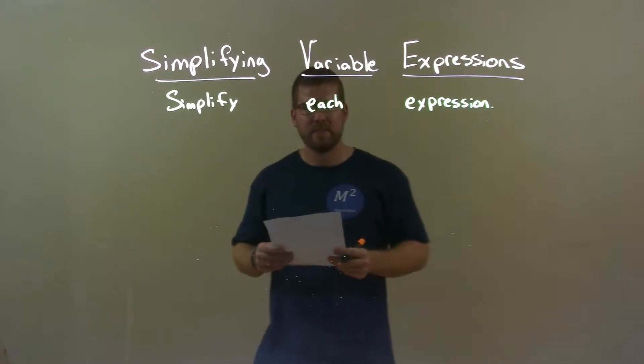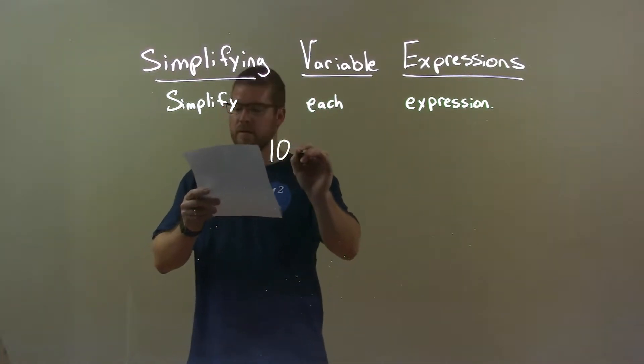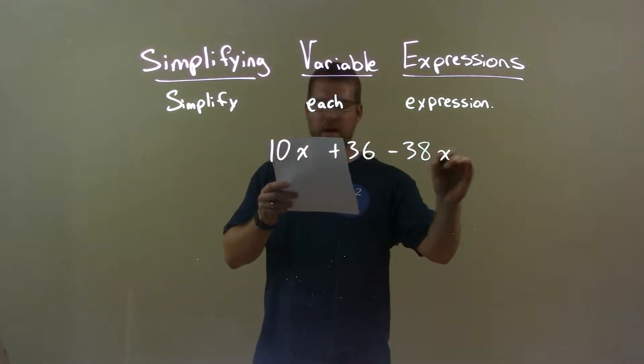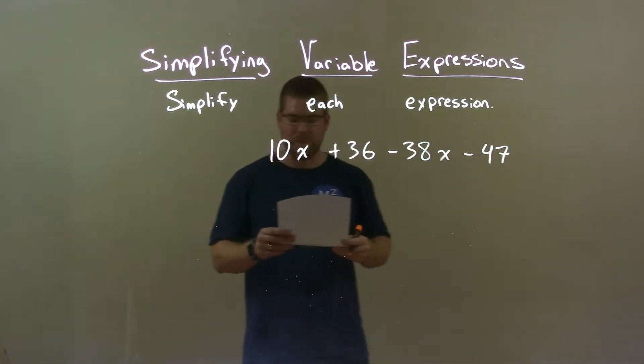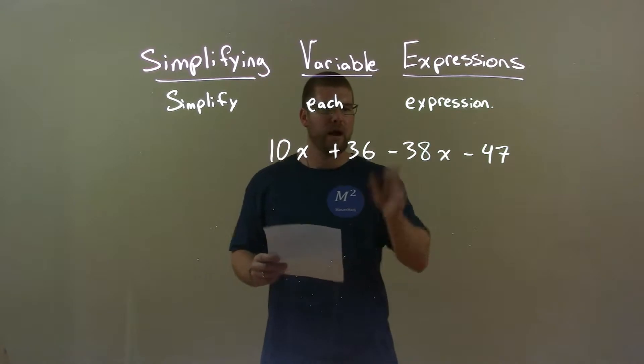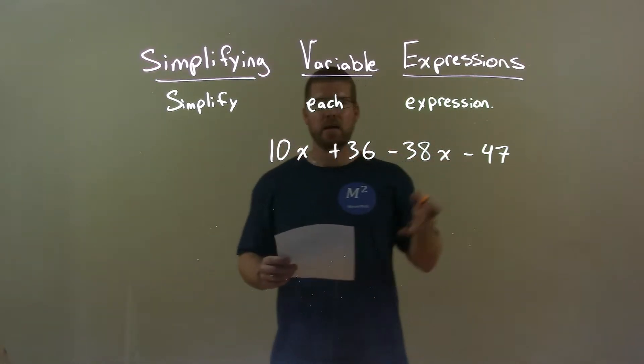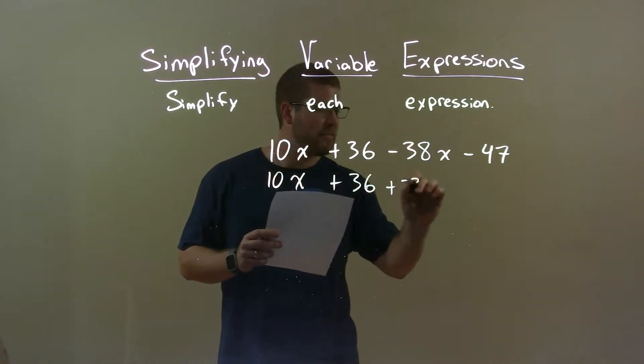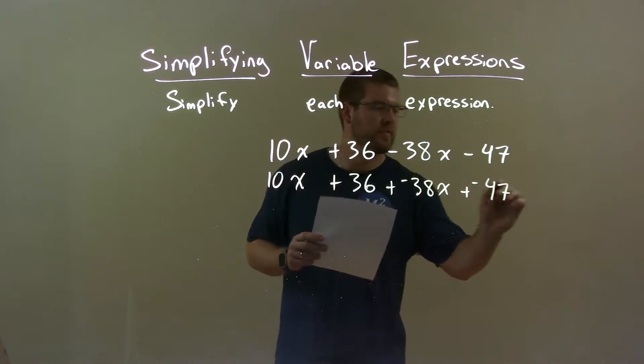So, if I was given this expression: 10x plus 36 minus 38x minus 47. Kind of large there. So first step I like to do here is I like to write all my subtractions as adding a negative. 10x plus 36 plus a negative 38x plus a negative 47.